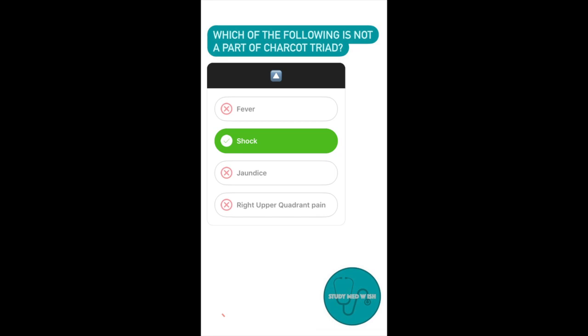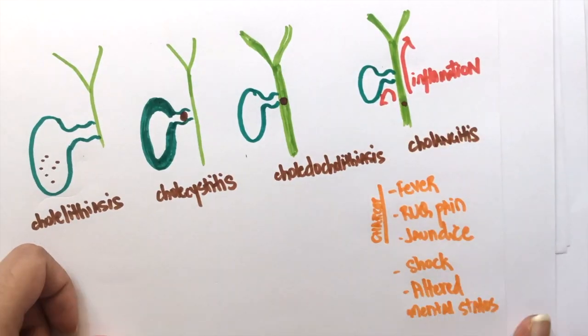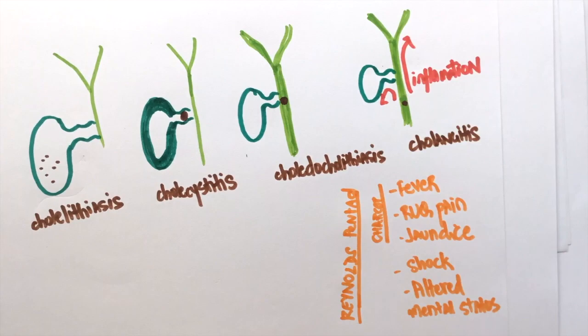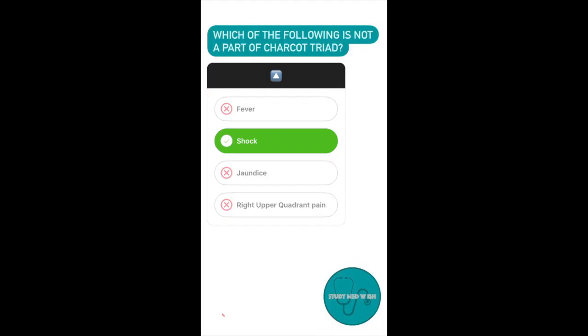Shock can be seen in severe cases when the inflammation starts spreading. Shock would result in decreased perfusion to the brain. That can lead to altered mental status. These five things come together to form Reynault's pentad. So, the answer to this question is shock.